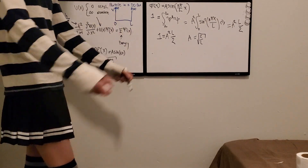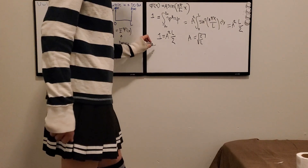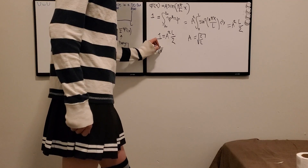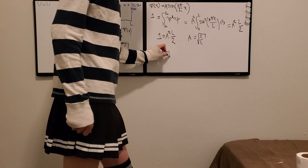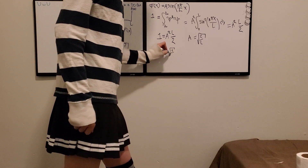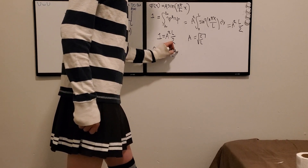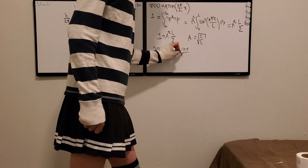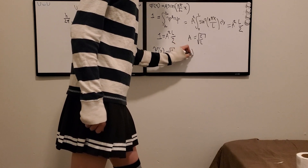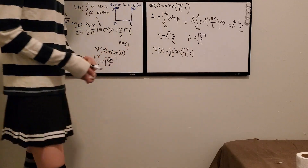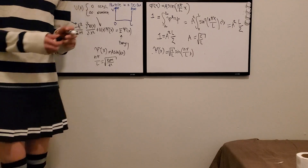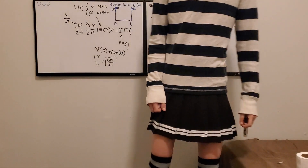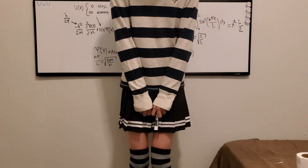So our final wave function is psi of X equals the square root of 2 over L, times sine of N pi over L times X. And there you go — that's how you solve for a particle in a one-dimensional box. Bye!